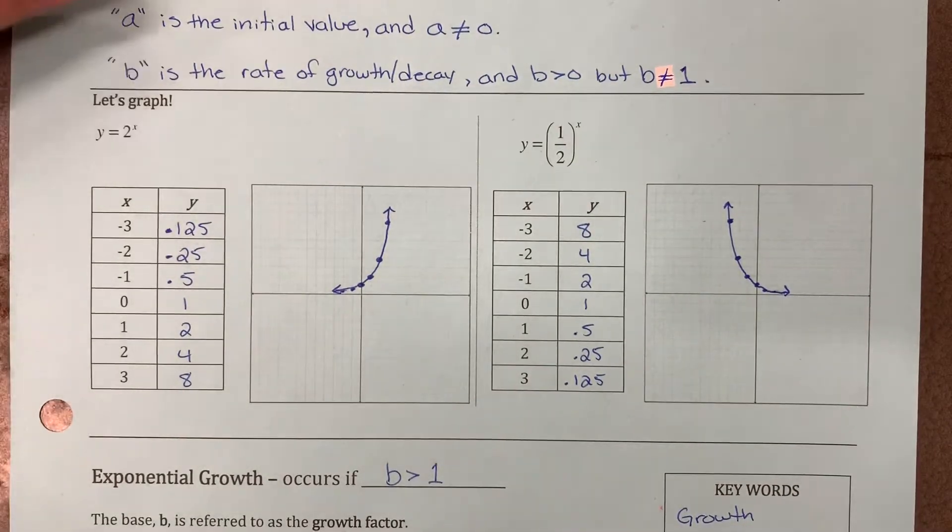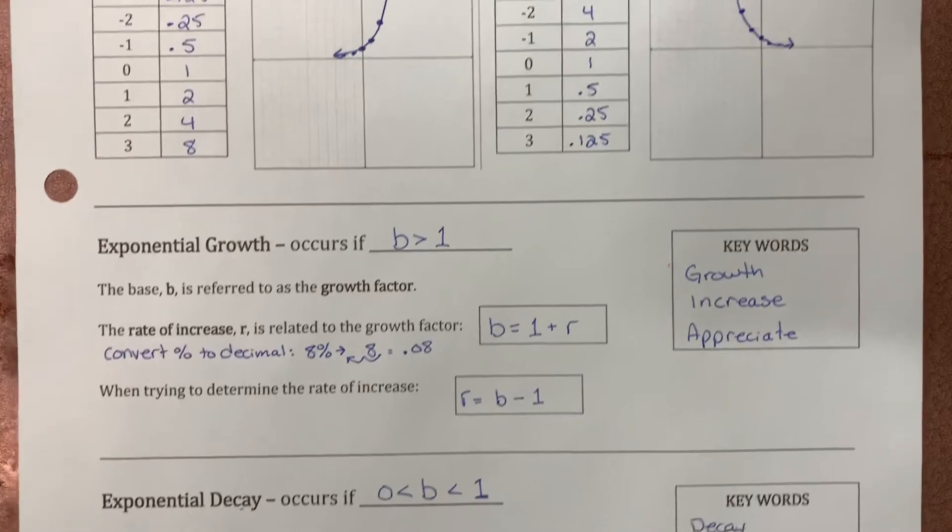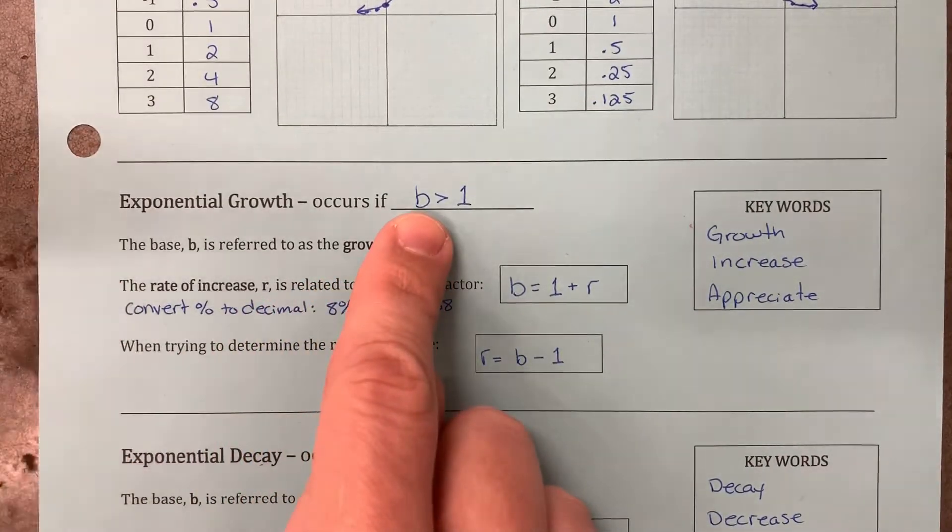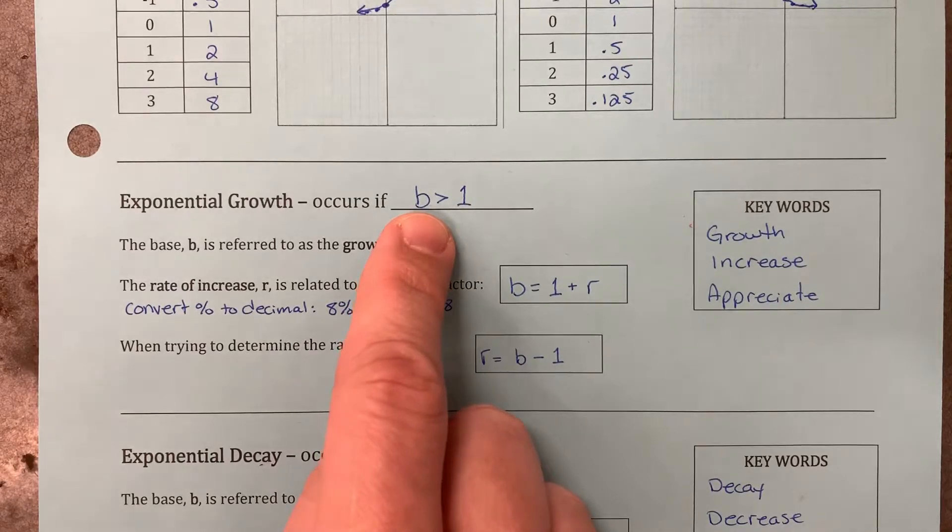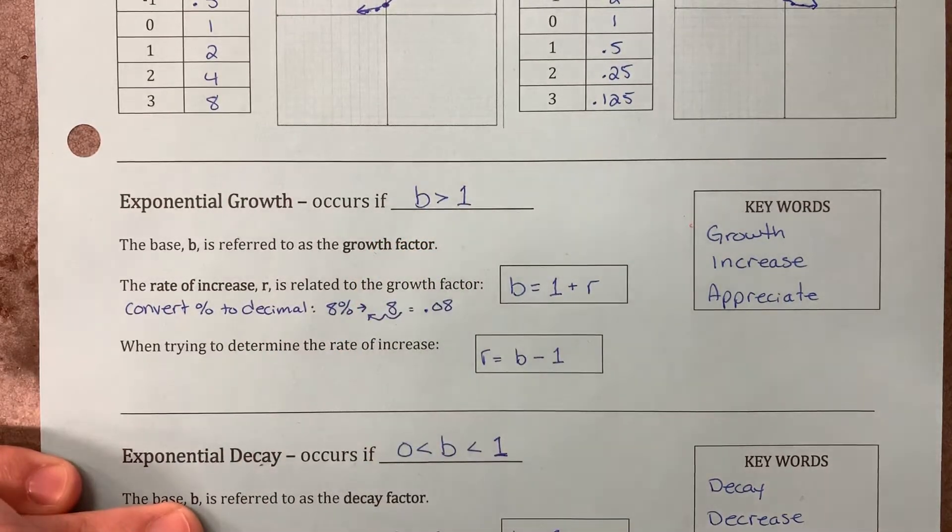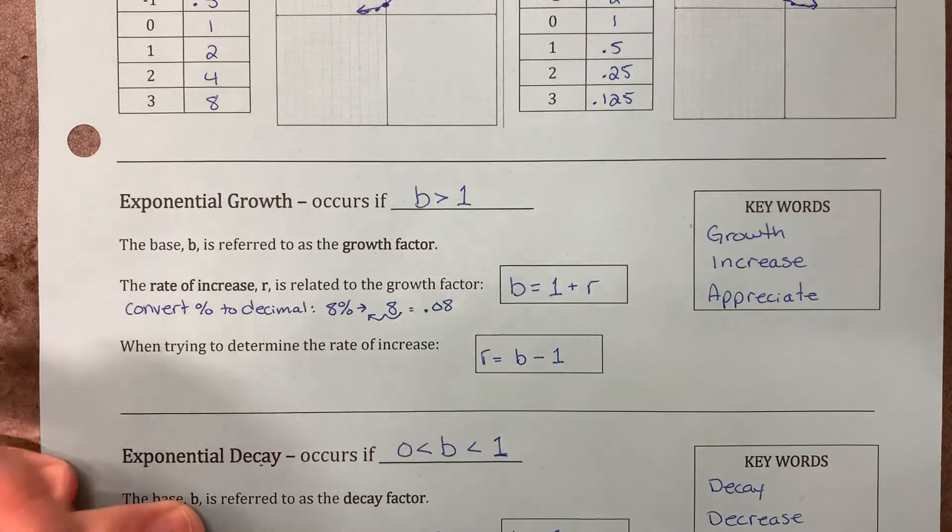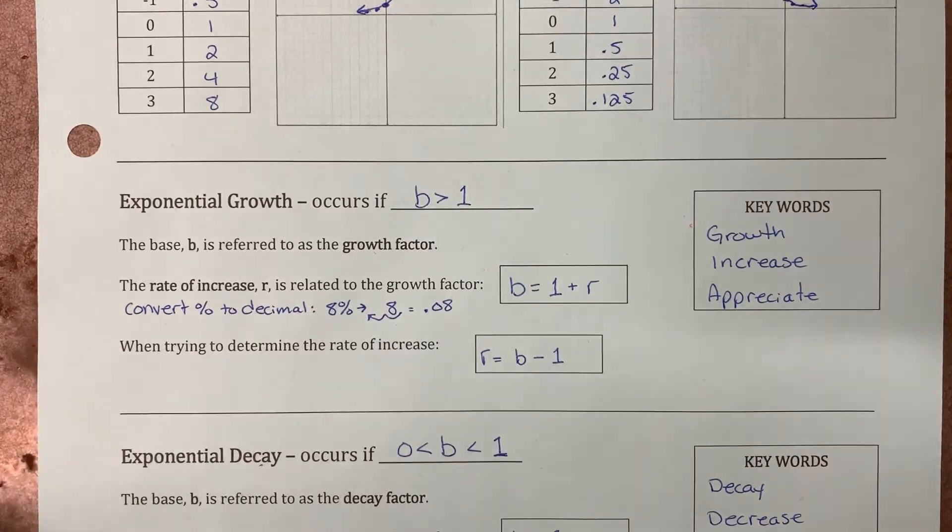Now, breaking down exponential growth and decay. First, we'll talk about growth. How do we know that a problem is an exponential growth? That's when the b value is something greater than 1. Maybe it's a whole number. Maybe it's a 2, a 3, a 4. Maybe it's decimals. 1.1. That's a value greater than 1, so that represents growth. 1.25. 1.375. All examples of growth.